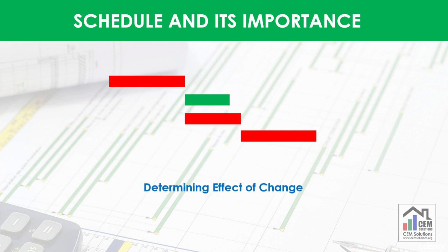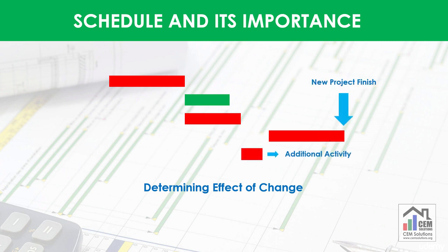Schedule also helps in determining the effect of a change on a project. For example, if the client wants to add some additional feature in a project, then a new completion date can be predicted by adding activities in the schedule. This prediction can help the client to finalize his decision and will also help the contractor to claim extra time or cost for this change.